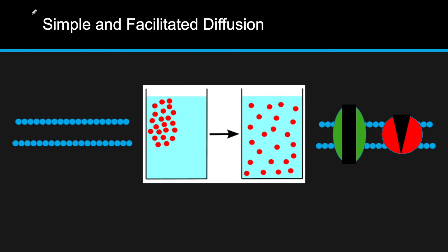First, we have the simple property of diffusion. If there's an area of concentrated solute, it will spread out by random movement, and eventually the concentration across the whole liquid will be the same. There are basically two types of diffusion: simple diffusion and facilitated diffusion.